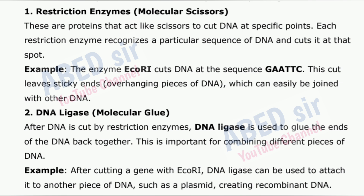2. DNA Ligase – Molecular Glue. After DNA is cut by restriction enzymes, DNA ligase is used to glue the ends of the DNA back together. This is important for combining different pieces of DNA. For example, after cutting a gene with EcoRI, DNA ligase can be used to attach it to another piece of DNA, such as a plasmid, creating recombinant DNA.